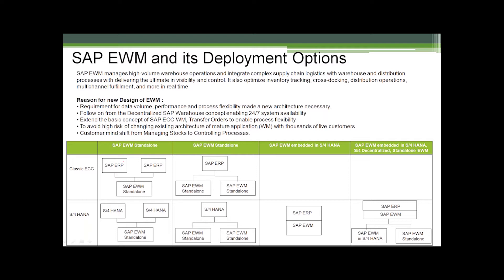The requirement was that these warehouses should work 24x7, so even when the ERP system is down, the EWM system should keep working. SAP also wanted to change the basic concept of SAP WM where transfer orders were used, to give more flexibility. There was a risk in changing the existing mature WM application used by thousands of live customers, so SAP brought in a new product — SAP EWM. With SAP EWM, SAP is also looking to change the mindset of warehousing from just managing stock to controlling processes and helping achieve warehousing objectives.